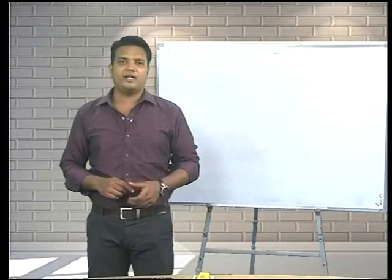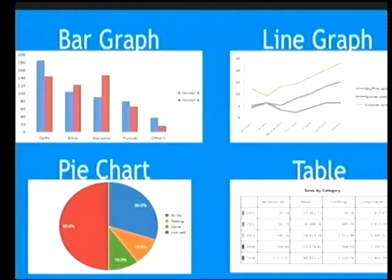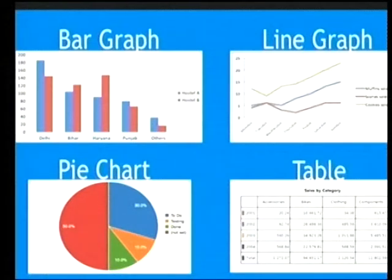Let me explain how these graphs work. A bar graph uses bars to represent data — single bars displayed visually. A line graph represents the same data using lines. A pie chart is always represented in terms of a circle — like income and expenditure examples from school mathematics. The fourth type is a table. Each graph type has its own advantages and disadvantages.